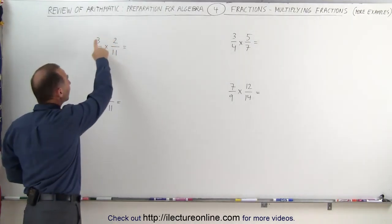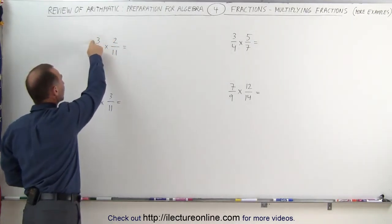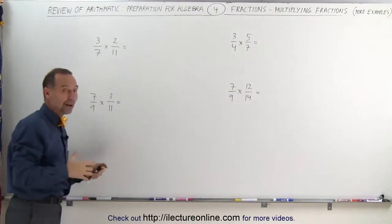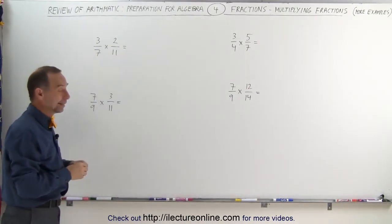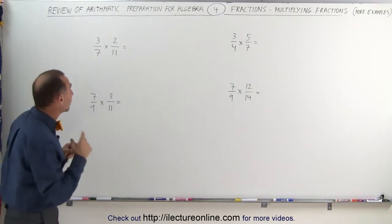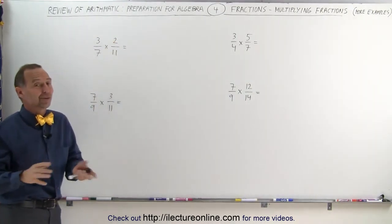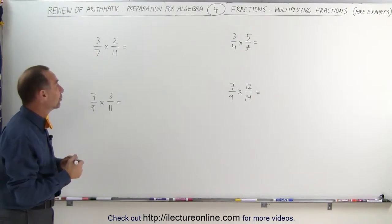Notice though, here, that on these two fractions, the numbers 3, 7, and 11 are all prime numbers, meaning they can only be divided by themselves and by 1. That doesn't leave you a lot of chance, and by the way, 2 is a prime number as well. They're all prime numbers, they're all different, no chance of reducing.